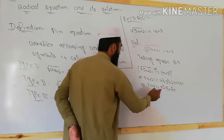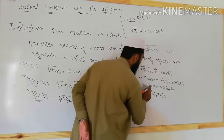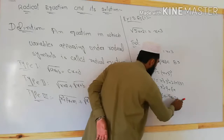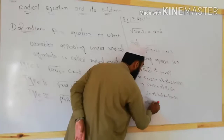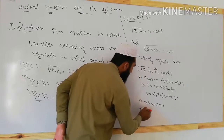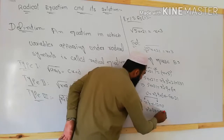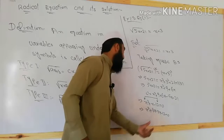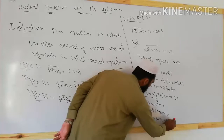Shifting all terms to the right side: 0 = x² + 9 + 6x − 5x − 21, which simplifies to x² + x − 12 = 0. This is a quadratic equation. We solve by factorization — finding two terms whose addition gives +x and whose multiplication gives −12. So: x² + 4x − 3x − 12 = 0.